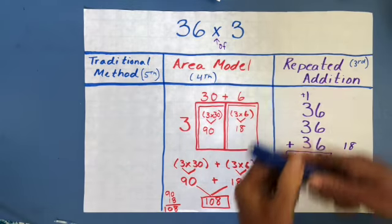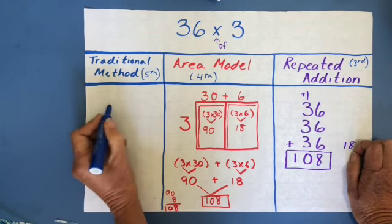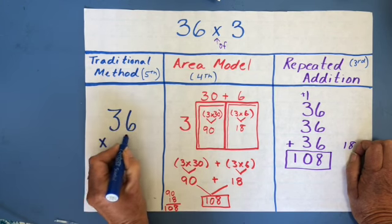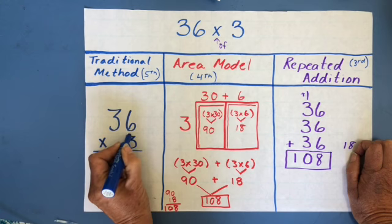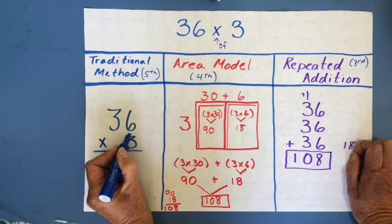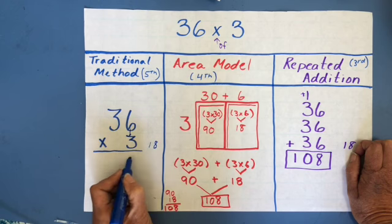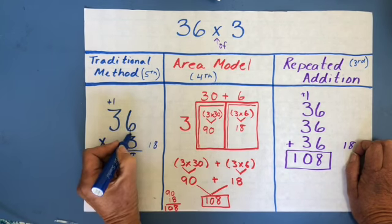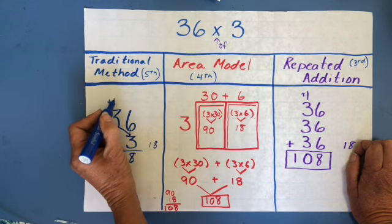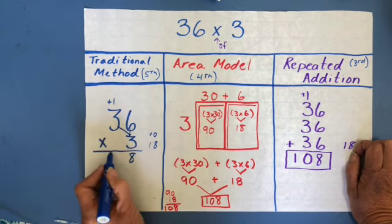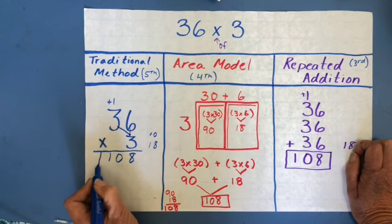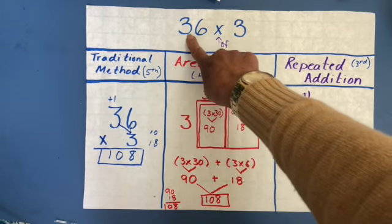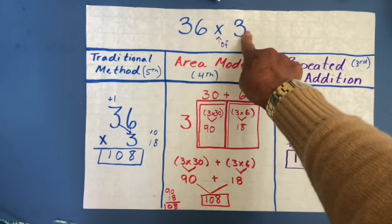Last, the traditional method for 36 times 3. Going to the ones place first: 3 times 6 is 18. The ones place goes down, the tens place goes up. Then 3 times 3 is 9, plus 1 more is 10. There's no hundreds place, so I drop it, and I get the same answer, 108. That's three different ways to do a two-digit number times a one-digit number. I hope that helps.